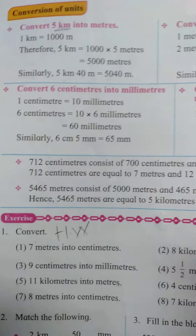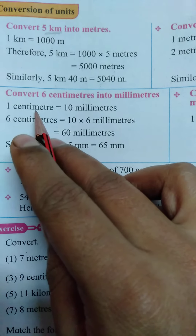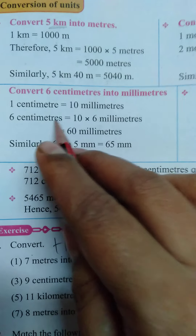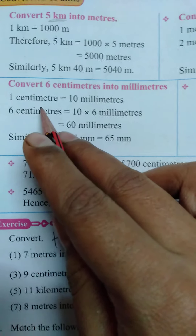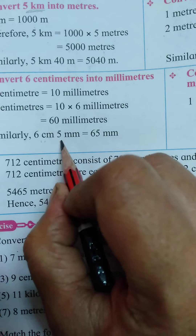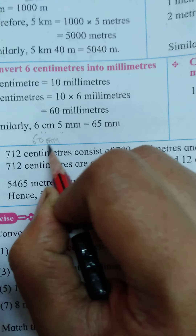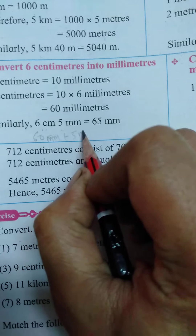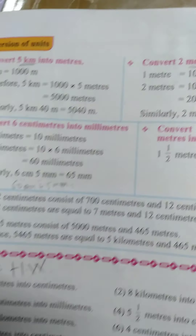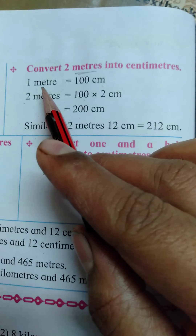Understanding, students? Good. Convert 6 centimetres into millimetres. First we have to write: what is the value of 1 centimetre? 1 centimetre is equal to 10 millimetres. Then 6 centimetres is equal to 10 multiplied by 6, so 60 millimetres. And if we take 6 cm 5 mm, then 6 cm is equal to 60 mm, plus 5 mm — the answer is 65 mm. Understood?